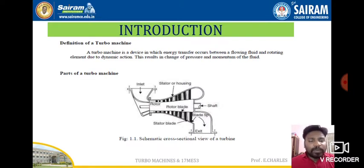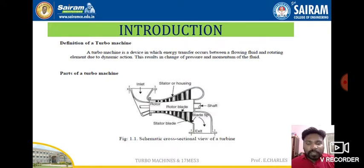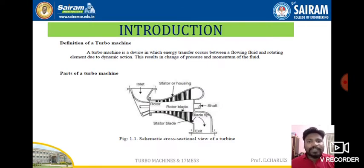In this turbo machine, there are two different types of blades: stator blades and rotor blades. The stator is a static element — it doesn't rotate or revolve. The stator is fixed; it guides the rotor blades, supports them, and helps avoid vibrations and damage. There is also a housing around the blades that protects them and prevents damage.